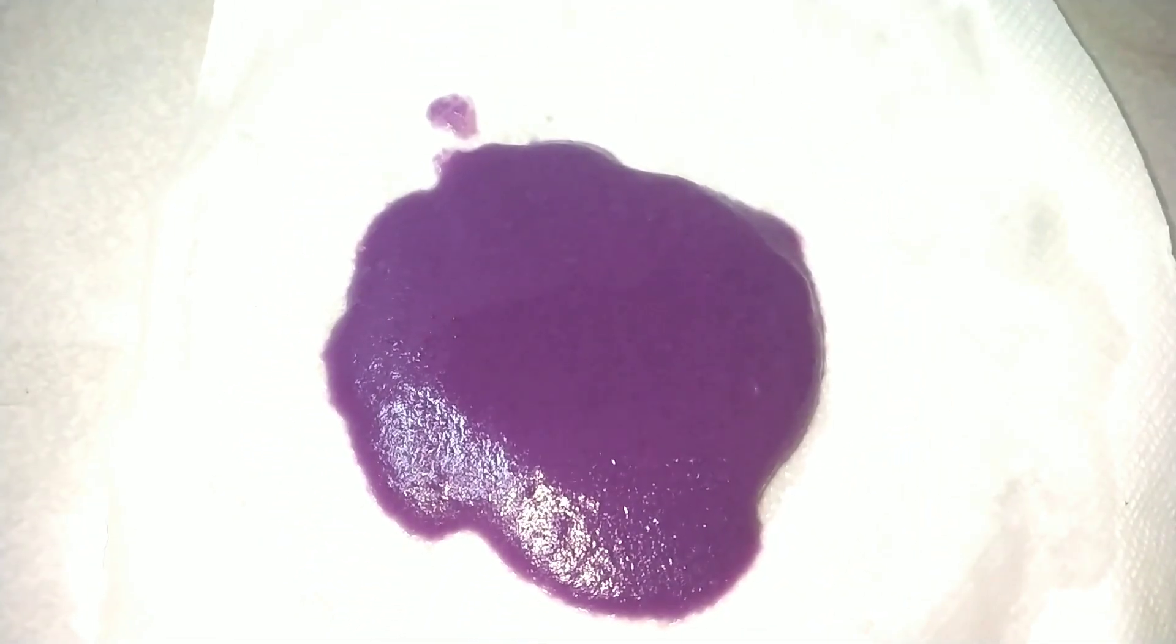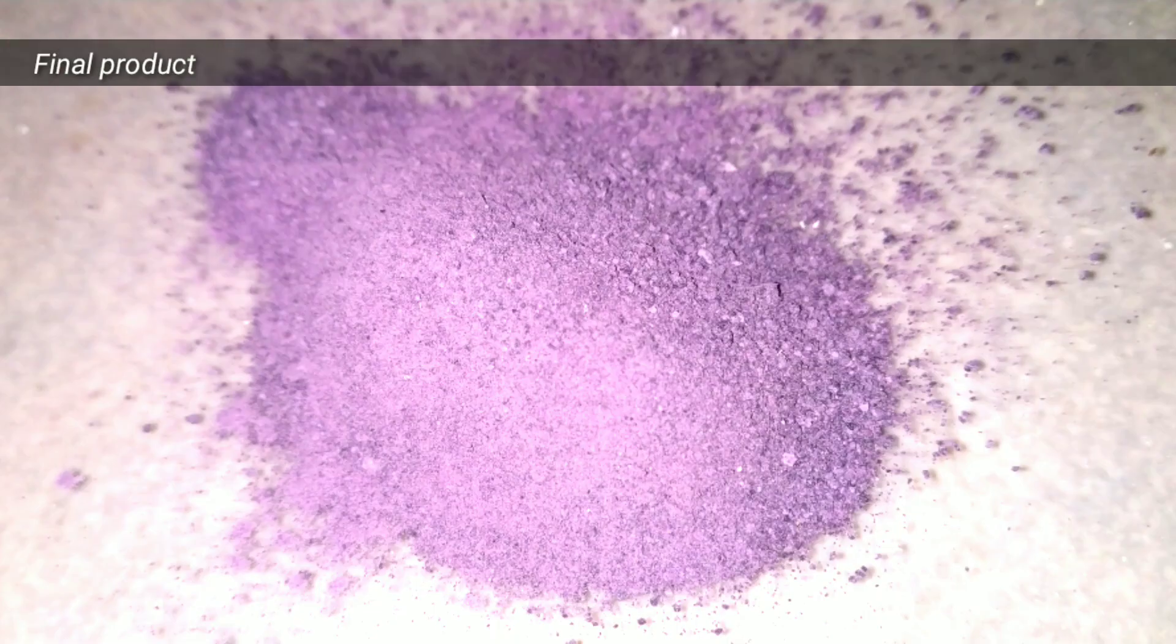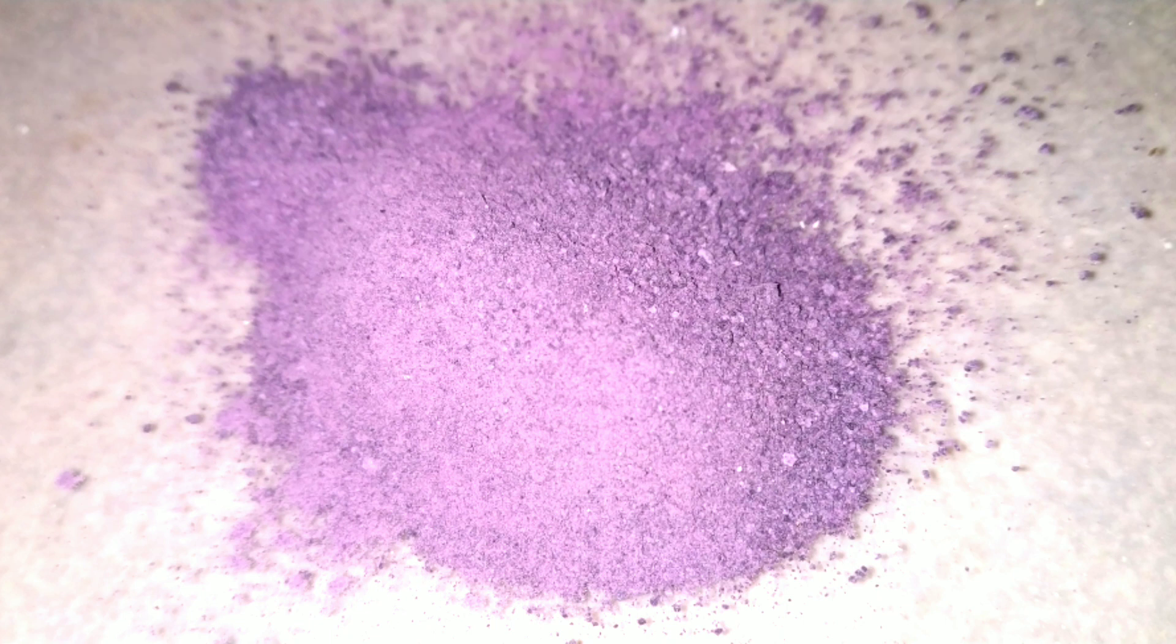After pouring it onto a tissue paper, I then kept this outside in direct sunlight and everything was completely dry in about 3 hours. Then I broke the clumps using a mortar and here is the final yield of cobalt 2 carbonate.